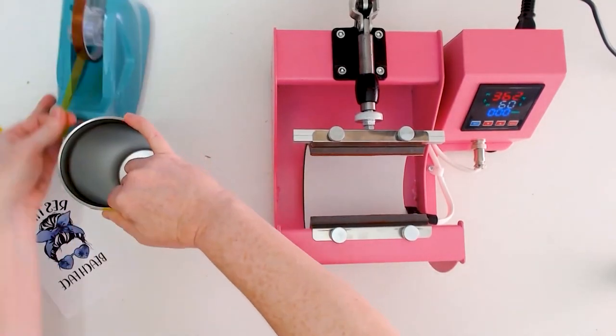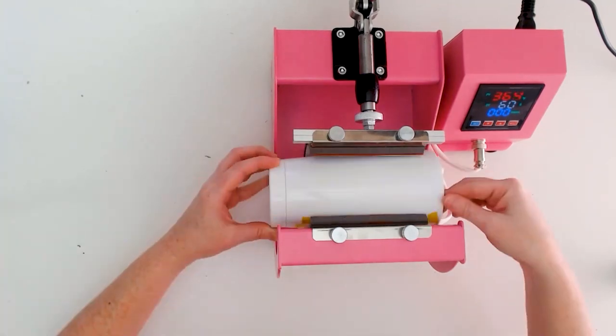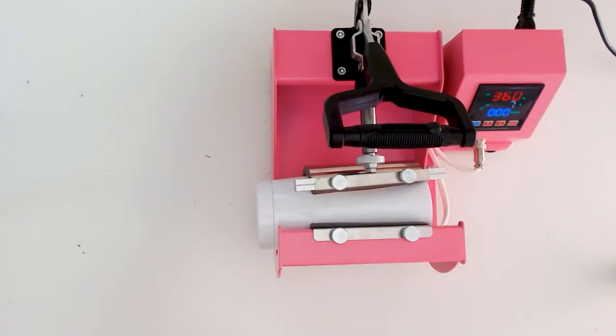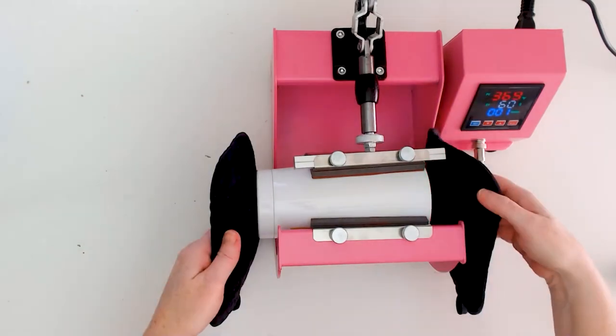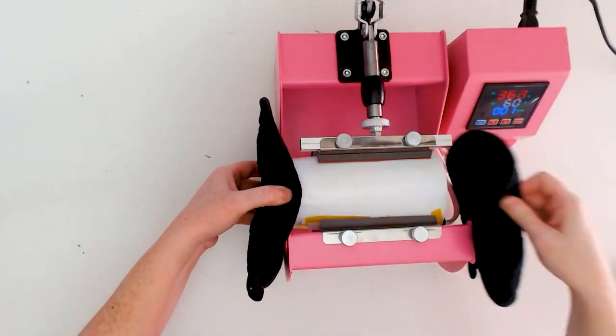Place the mug or tumbler in the middle of the heat pad and then pull down on the handle. Then press the red button on the side of the press to start the timer. The machine will beep when the timer is done and just press the red button to stop the timer.